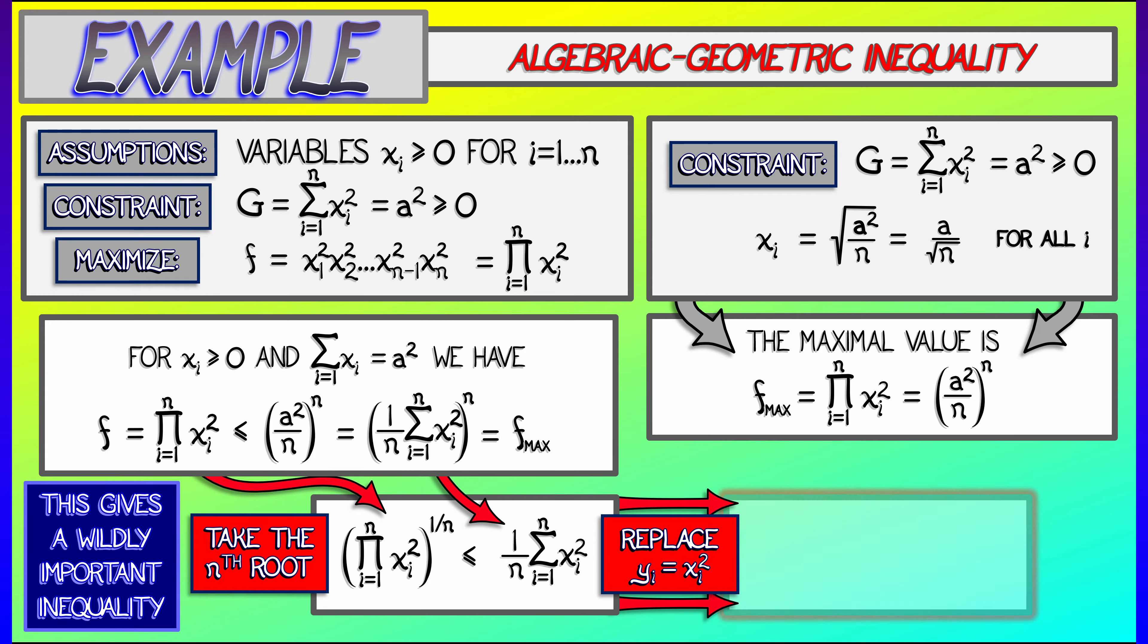y sub i. And what we get is on the left-hand side, the product of the y sub i's, nth rooted, is less than or equal to the sum of the y sub i's divided by n.